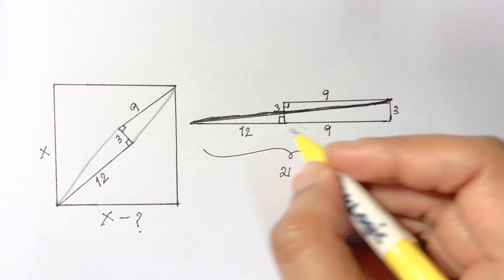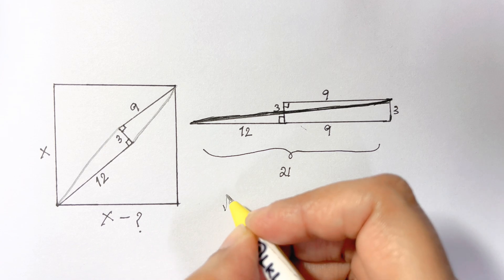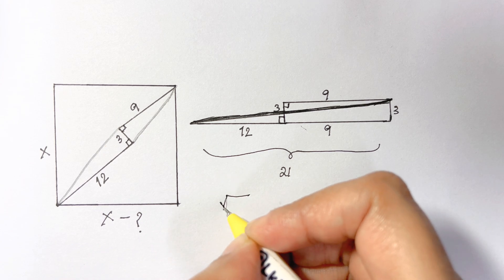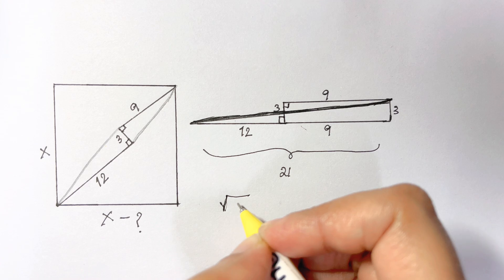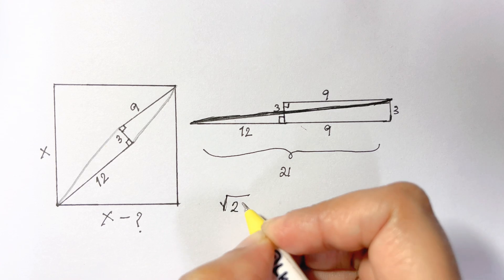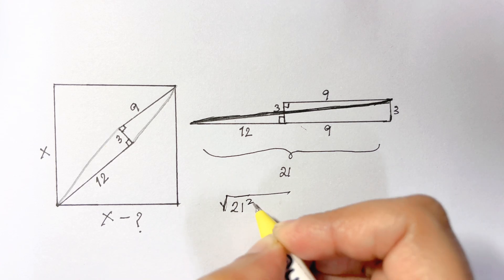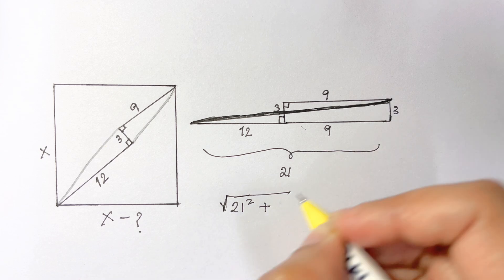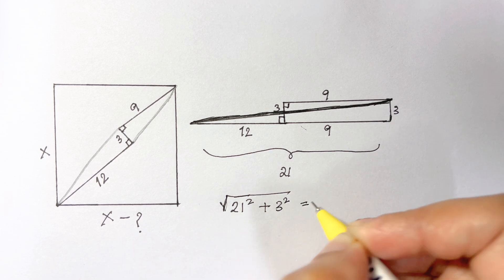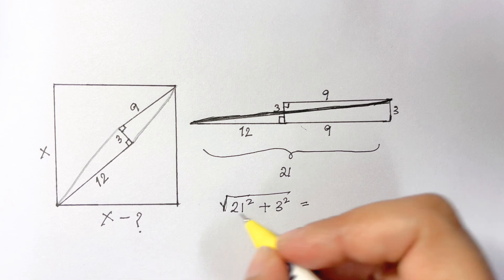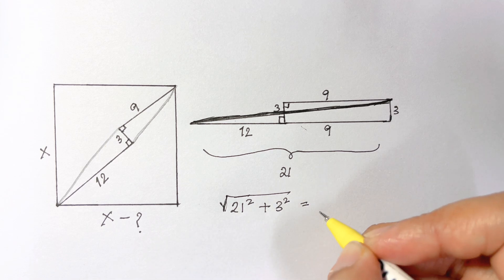What does the Pythagorean theorem say? Square root of this length 21 squared plus 3 squared is equal to the square of the hypotenuse.